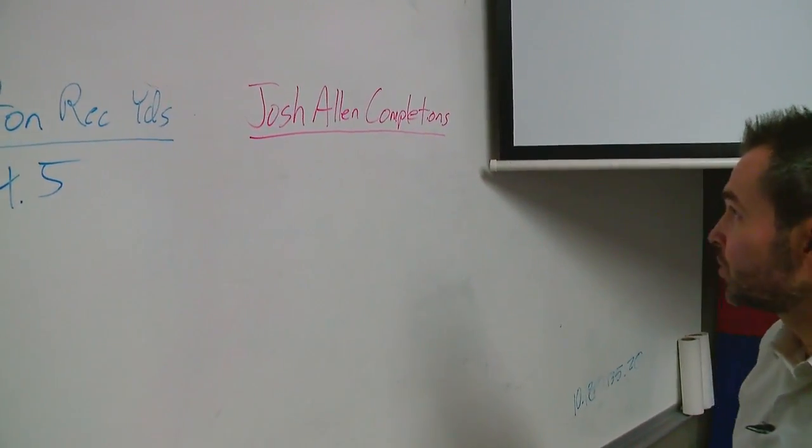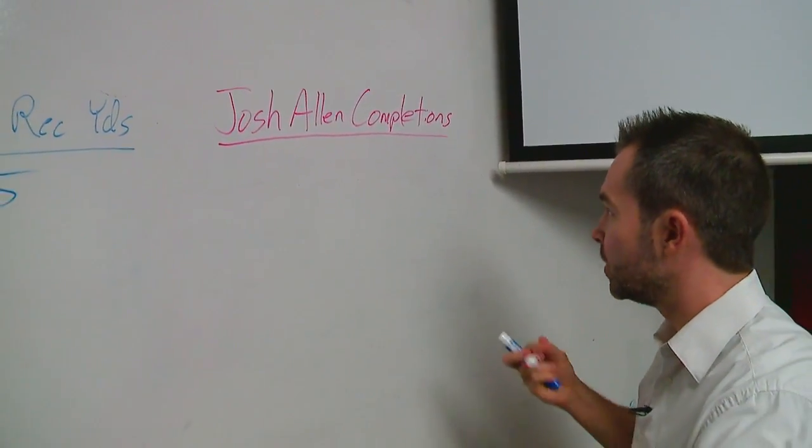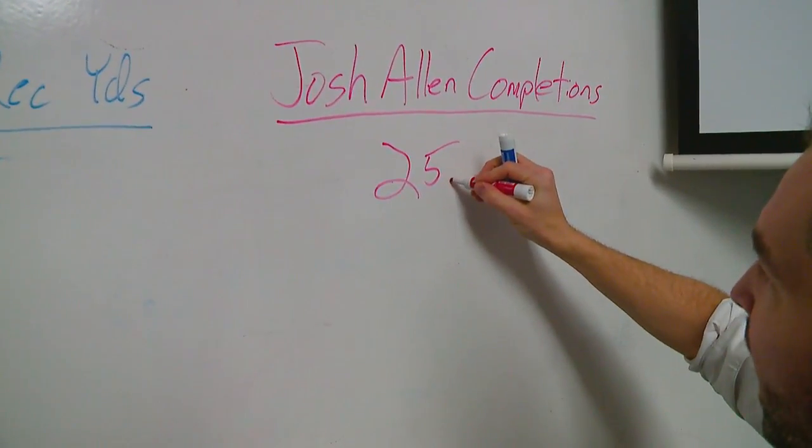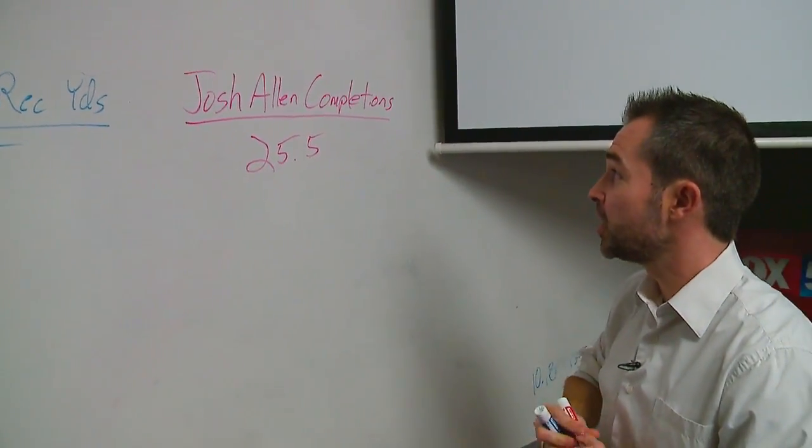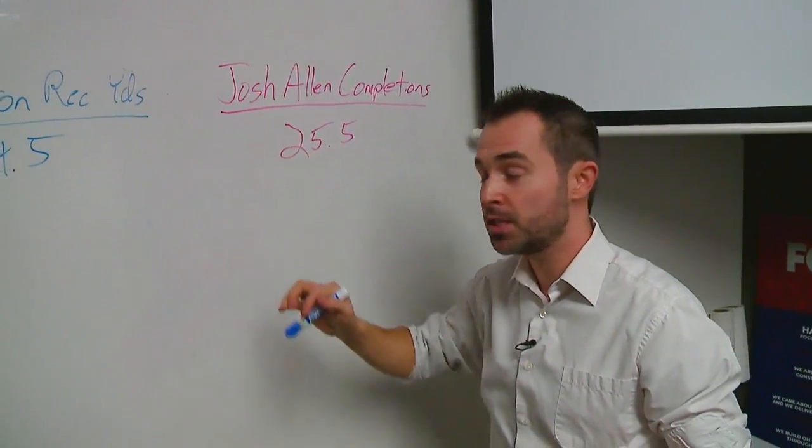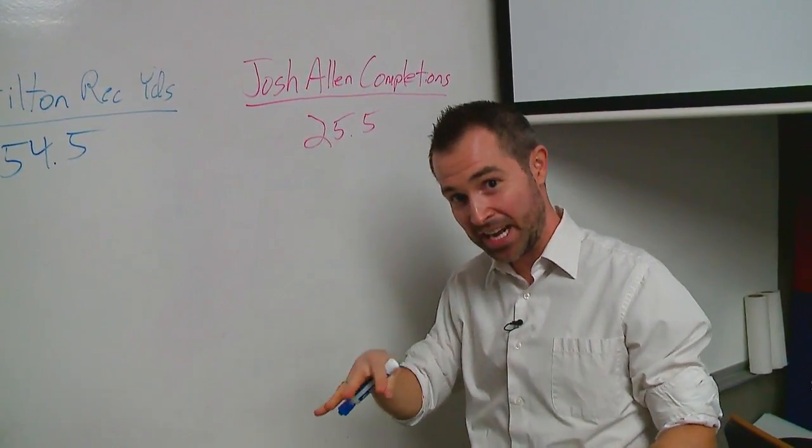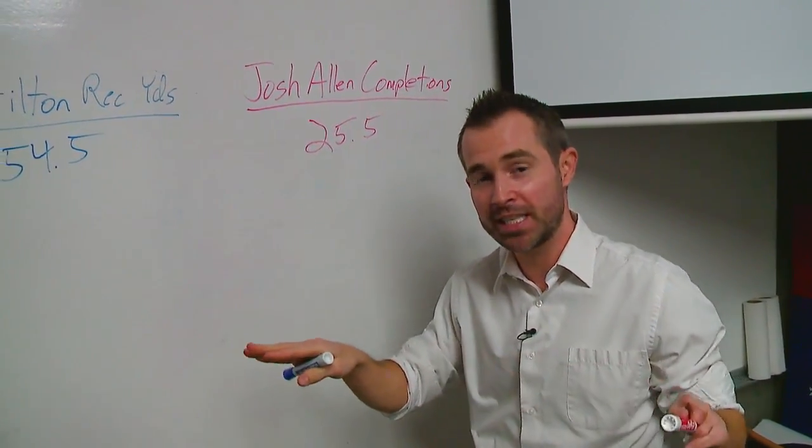One more number that I thought was interesting were completions for Josh Allen. Total number of completions for Josh is projected at 25.5. Looking at Josh Allen's numbers for the year in the 16 games he's played, he's had exactly eight over 25.5 and exactly eight under 25.5. So it splits that perfectly.